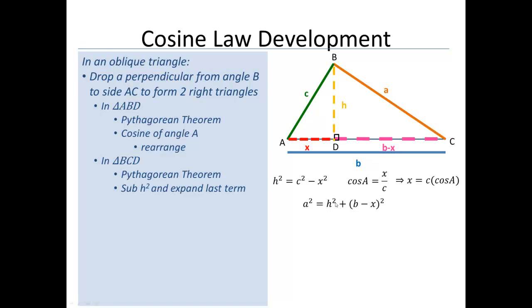So we should notice that we have a H squared right here. And we have a H squared right here. And they're the same H in the triangle. So I'm going to replace C squared minus X squared wherever I see H squared.